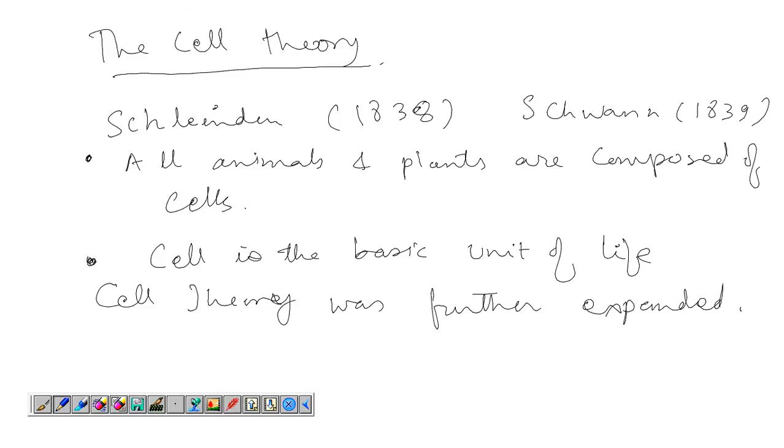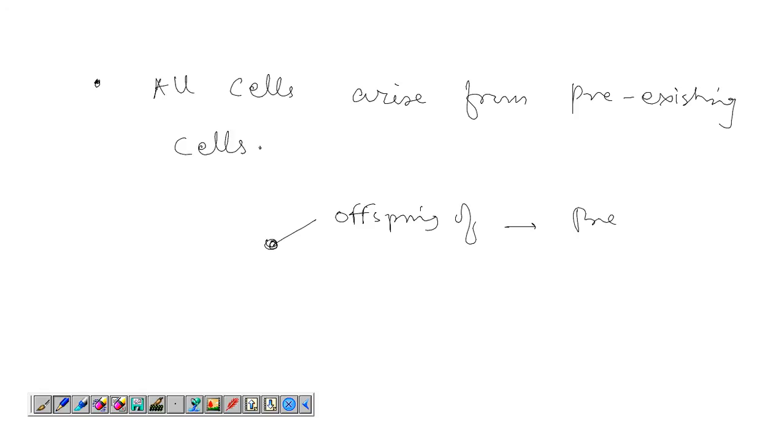It was expanded by Virchow in 1855. This guy made a very important point, which is all cells arise from pre-existing cells. It means a new cell is an offspring of a pre-existing cell.